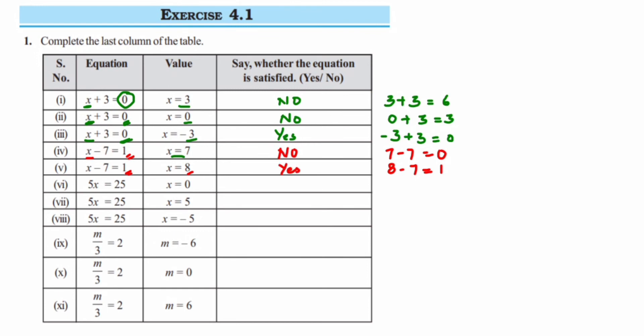Next, x is equal to 0. So here 5x means 5 into 0 is 0. But here they have given 25, so that's again a no.